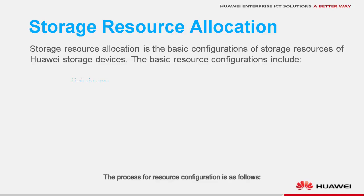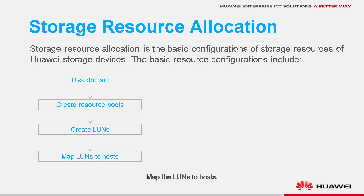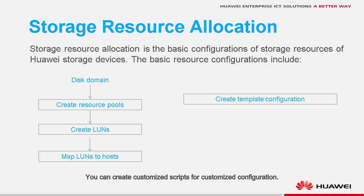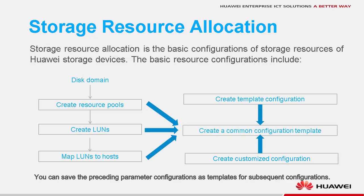The process for resource configuration is as follows: create a storage pool, create LUNs in the storage pool, then map the LUNs to hosts. You can create tasks in batches by using a template, and you can create customized scripts for customized configuration.